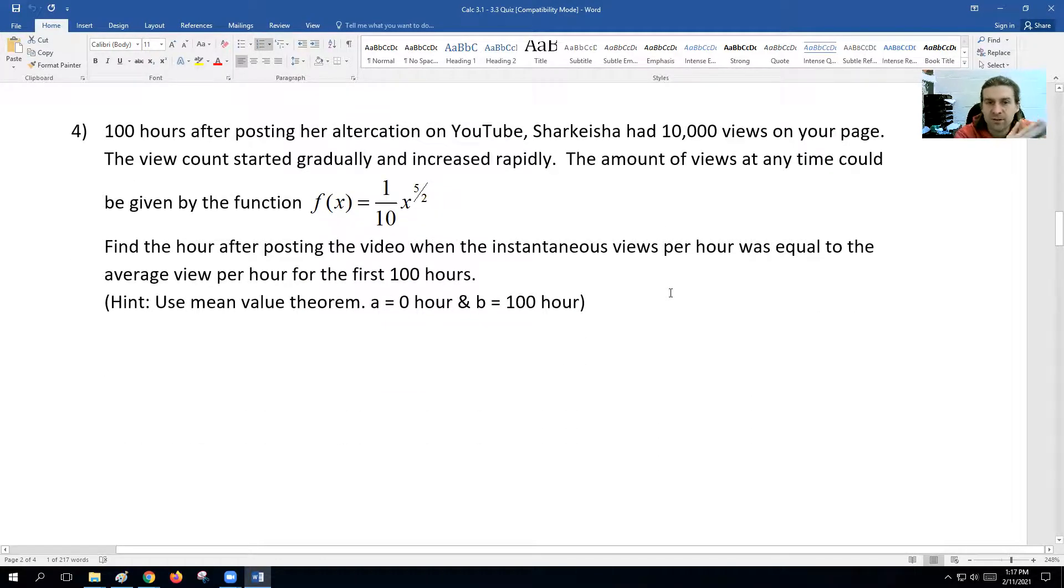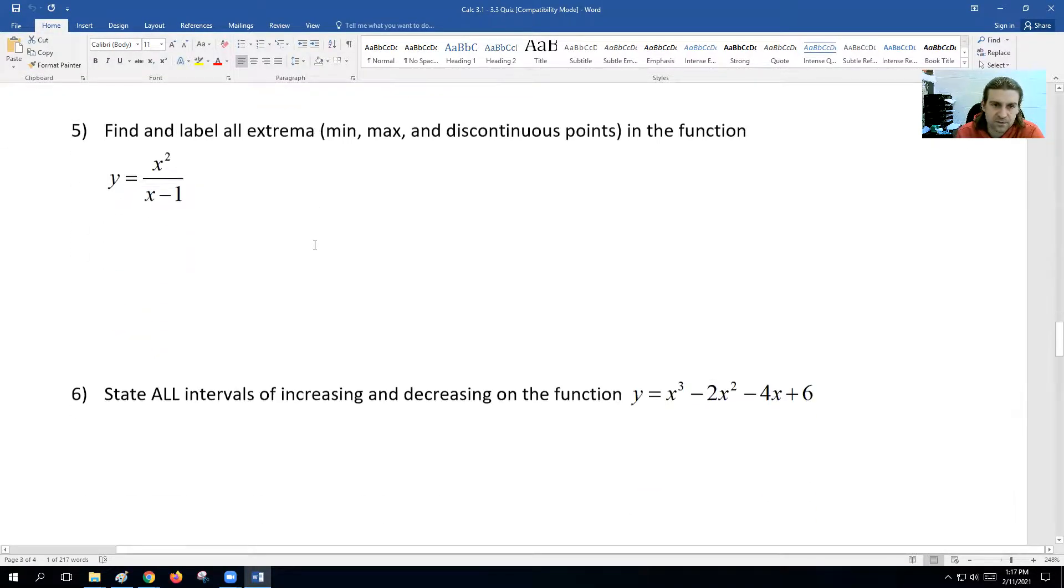Next we have a story problem involving the mean value theorem. You have your equation here and you're going to go through the same four steps. You just know A is zero and B is 100. You'll do f(100) minus f(0) over 100 minus 0 to get your average value. You then take the derivative of this equation using normal power rule - 5 halves times 1/10 and drop it down to 3 halves power. Take the derivative, set equal to the average value, and solve for X.